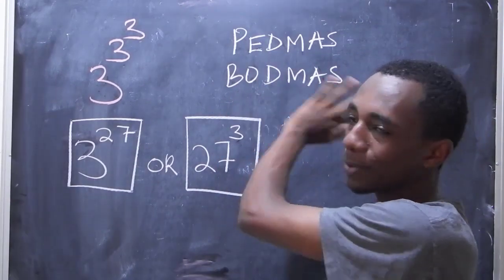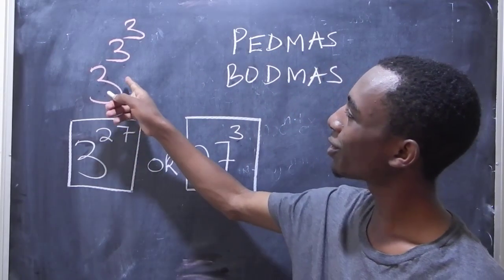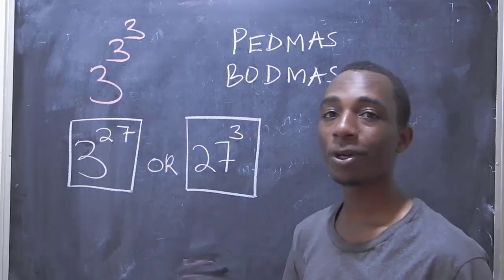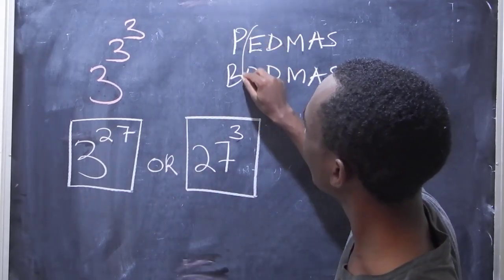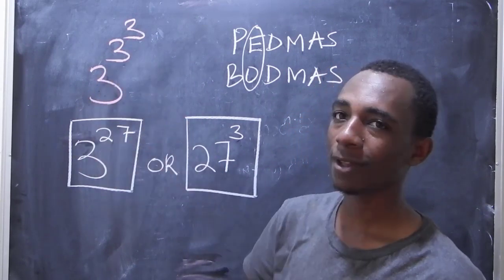And of course division, multiplication, addition, and subtraction follow. So now as you can see here, we actually have only one operation, which is the exponent operation, but then it is repeated twice, 3 to the power 3 to the power 3.